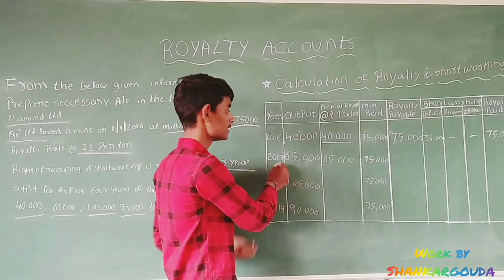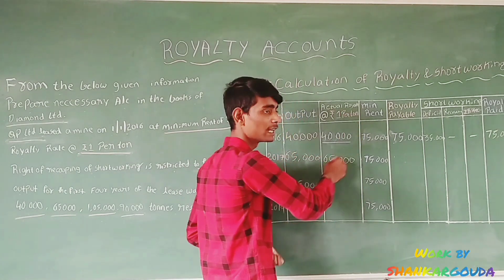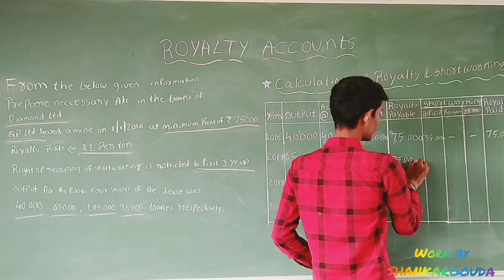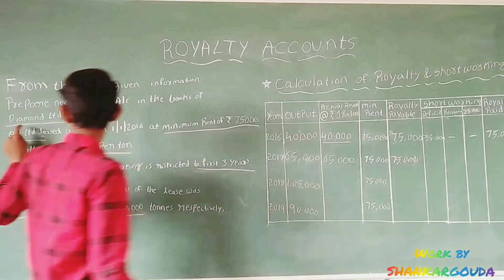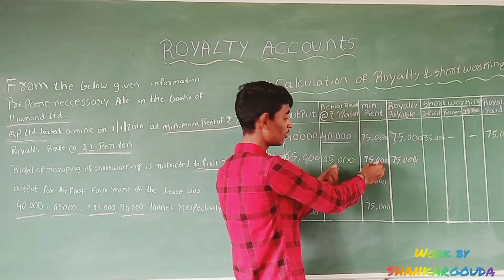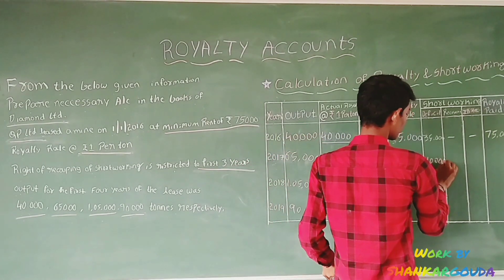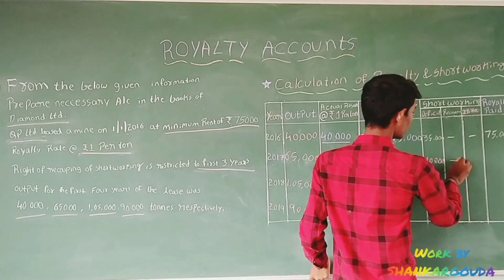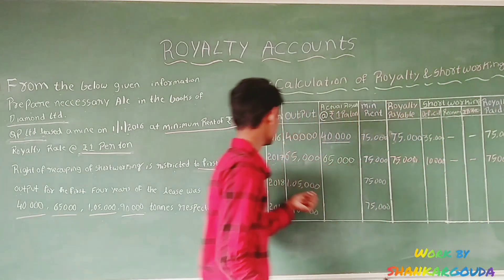In the year 2017, output is 65,000. Royalty is 65,000 into 1 equals 65,000. The minimum rent is 75,000, so the priority payable is 75,000. Since output is only 65,000, there is a short working deficit of 10,000 for this year. No recoupment, and the amount paid is 75,000.